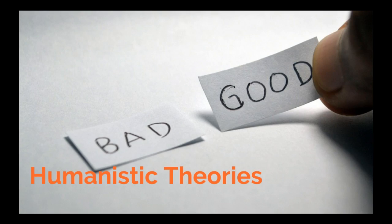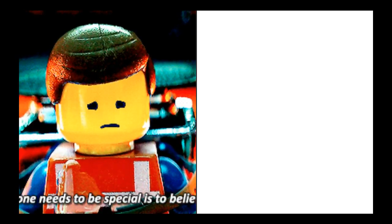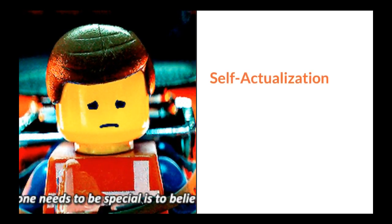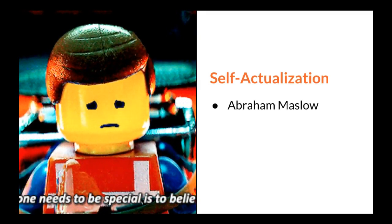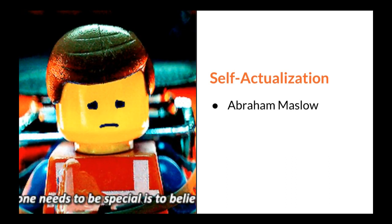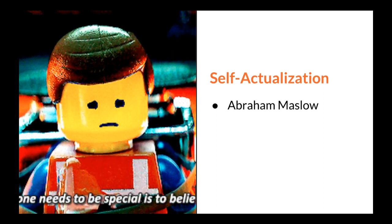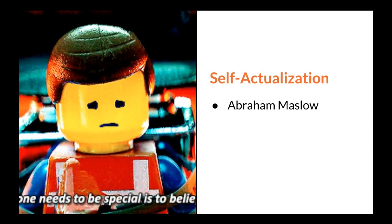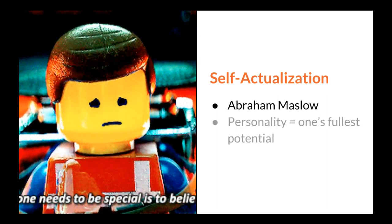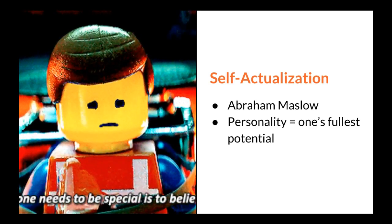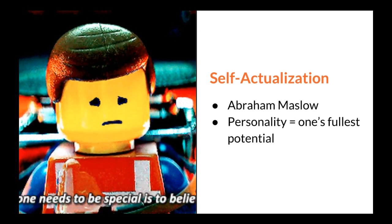In this section, we will discuss two specific theories. First, the theory of self-actualization is based on the work of Abraham Maslow and his hierarchy of needs. Recall that the hierarchy focuses on needs that we are motivated to meet to reach self-actualization. In the Lego movie, Emmet needs to believe that he is special on his own. Thus, personality is based on motivational factors and developing to one's fullest potential.